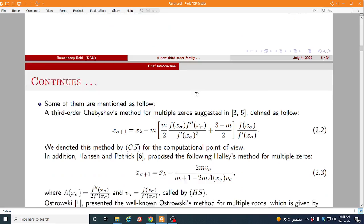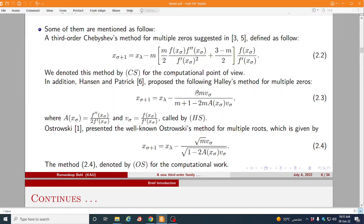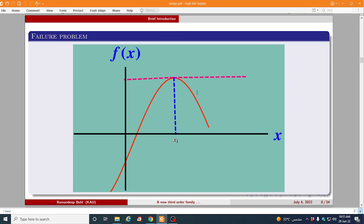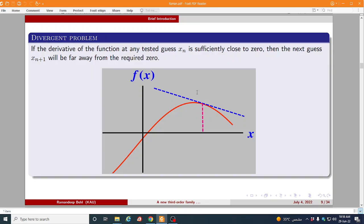So if you have a careful look on all these schemes, here f'(x) is in the denominator. So clearly whenever f'(x) is equal to 0 then this method will not work. I would mean to say that whenever f'(x) is equal to 0 that mean the slope is parallel to the x-axis. In that case none of the method will work here.